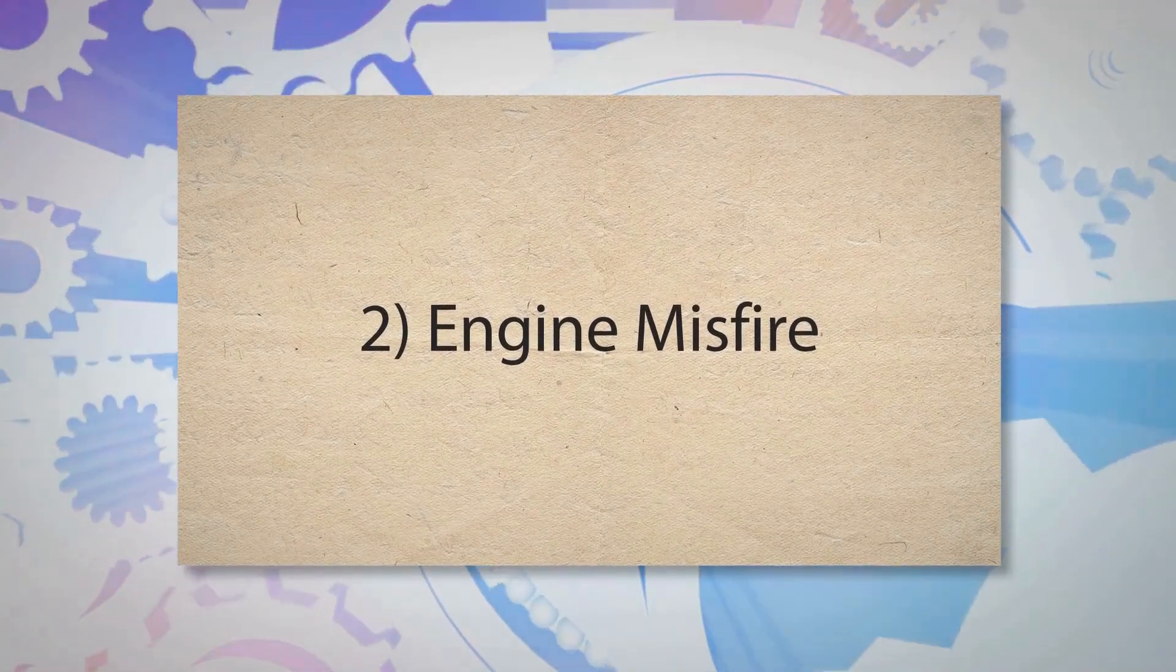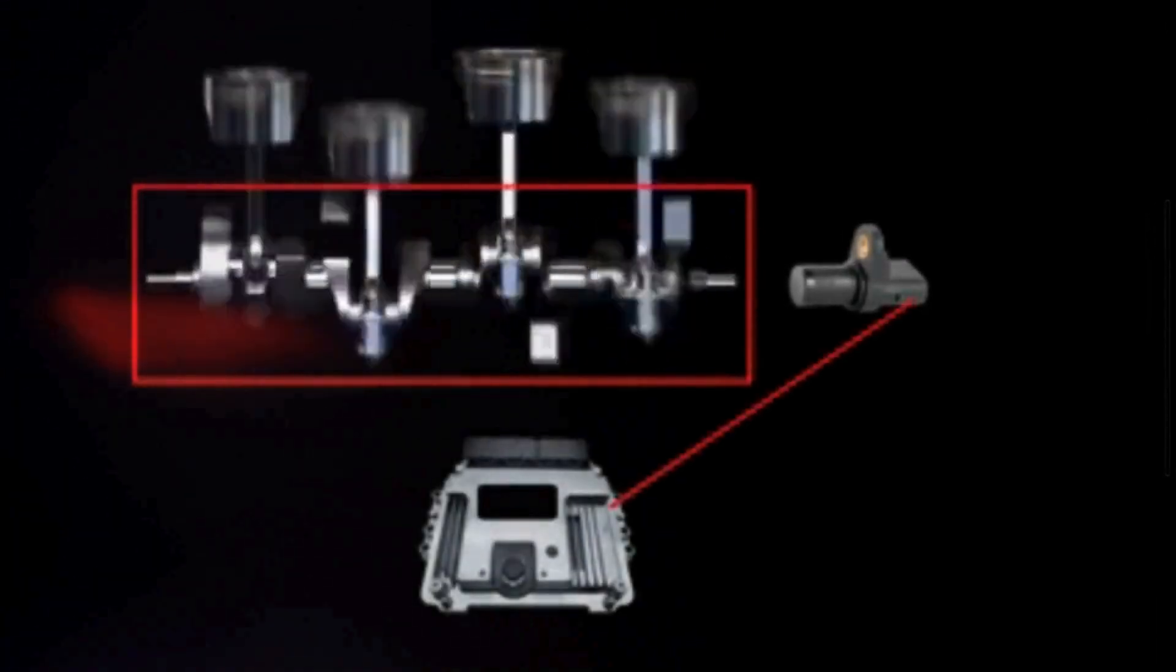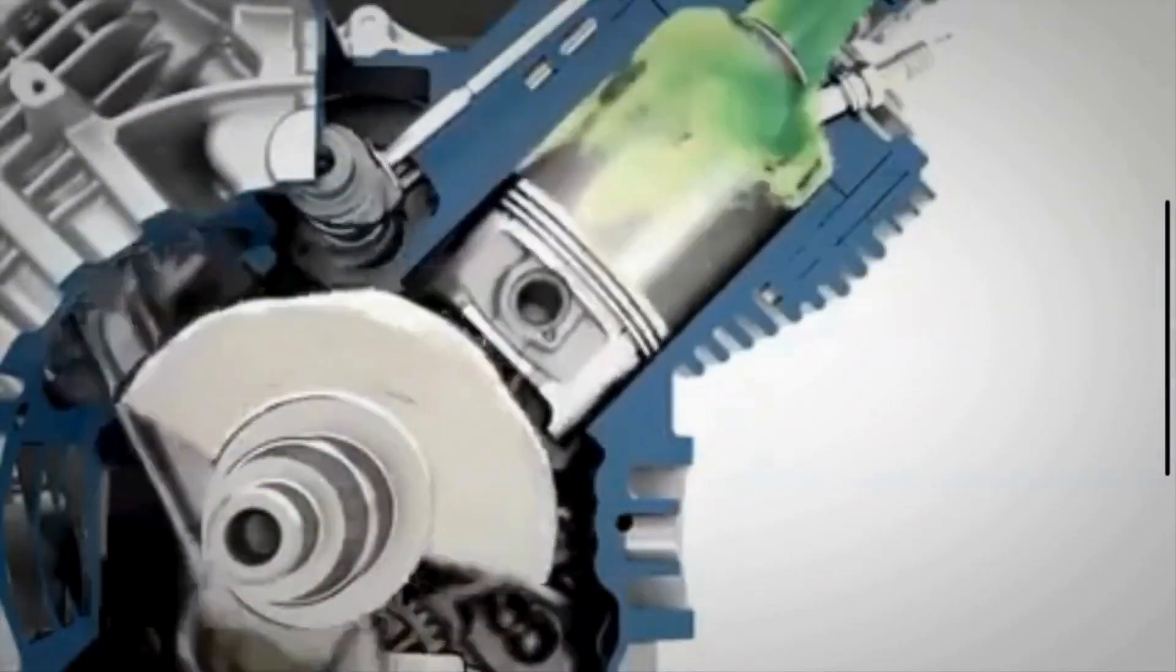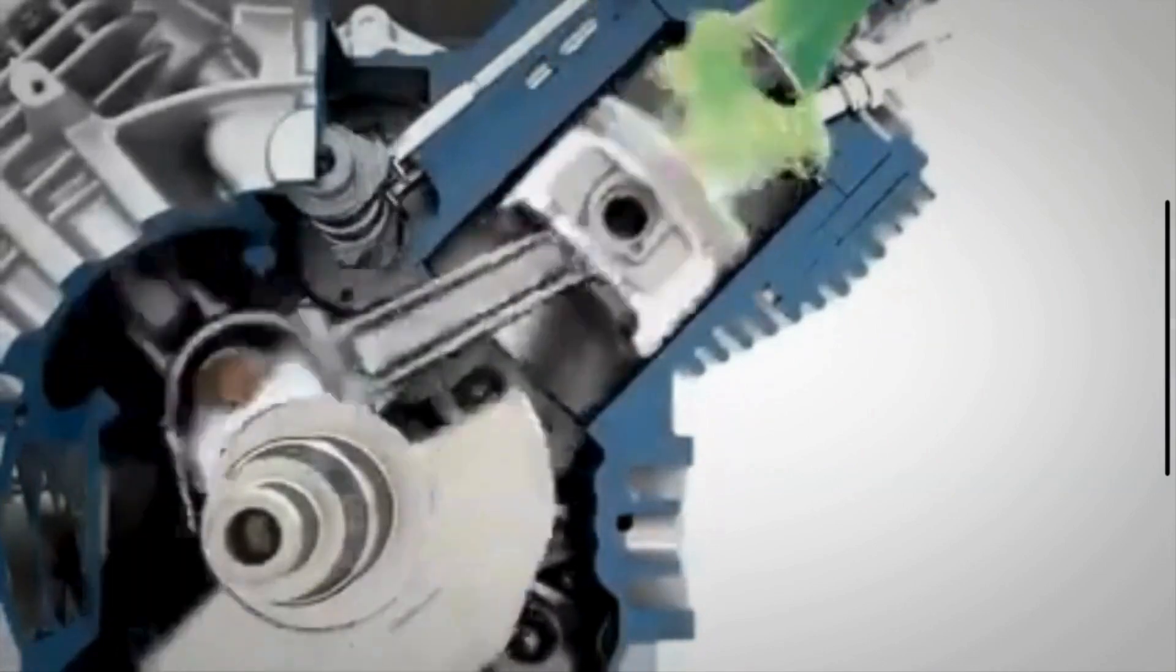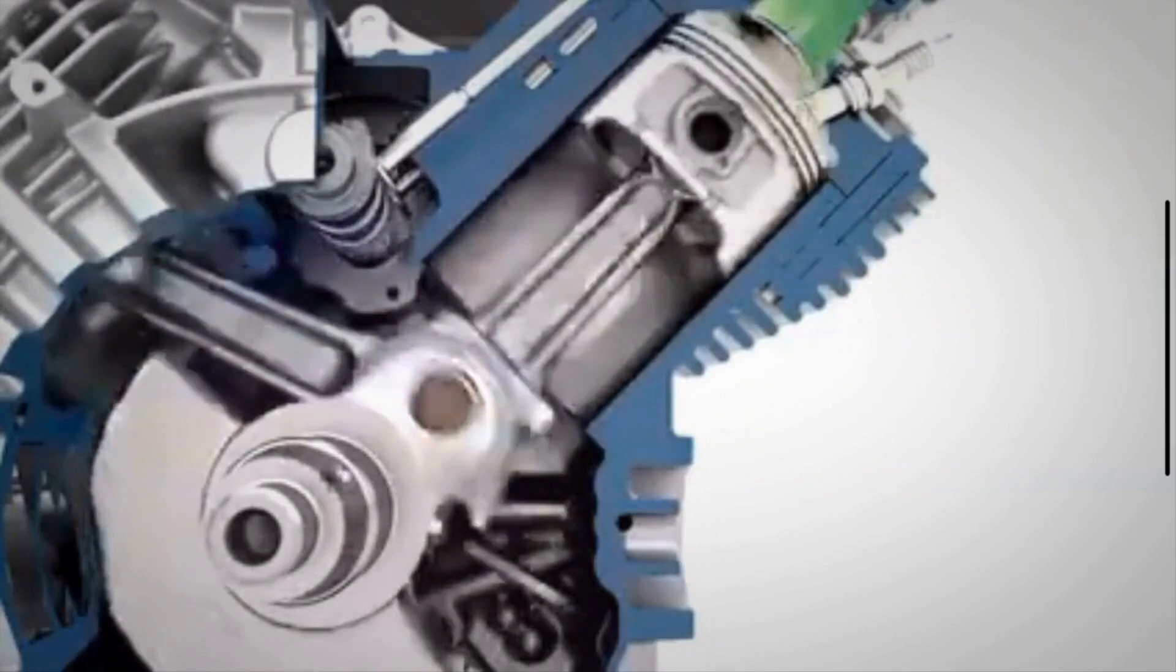2. Engine misfire. The crankshaft sensor helps the ECM determine the precise timing for fuel injection and ignition. A faulty sensor can disrupt this timing, causing incomplete combustion or firing at the wrong time, leading to misfires.